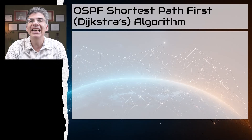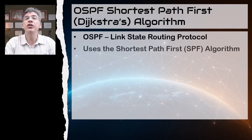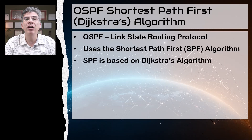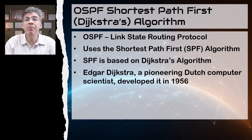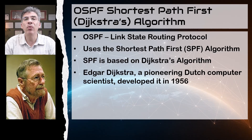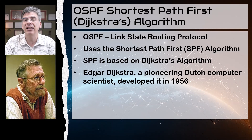OSPF is what is known as a link-state routing protocol, and it uses the shortest path first, or the SPF algorithm, to determine the shortest path to each destination. OSPF's SPF is based on a mathematical algorithm called Dijkstra's algorithm, developed by Edgar Dijkstra, a pioneering Dutch computer scientist. He developed it way back in 1956 — it was just a mathematical algorithm, but OSPF adopted its use.